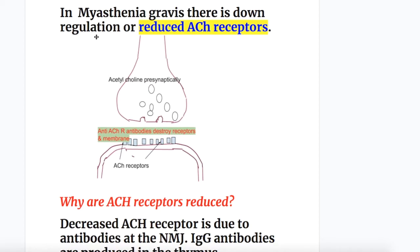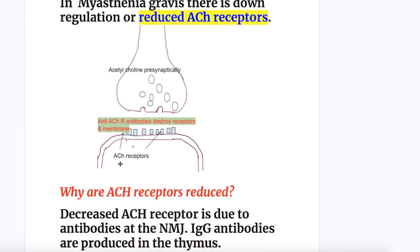In Myasthenia Gravis there is downregulation or reduced acetylcholine receptors at the postsynaptic terminal. The decreased acetylcholine receptors are due to antibodies at the neuromuscular junction. IgG antibodies are produced in the thymus and act to destroy the receptors.